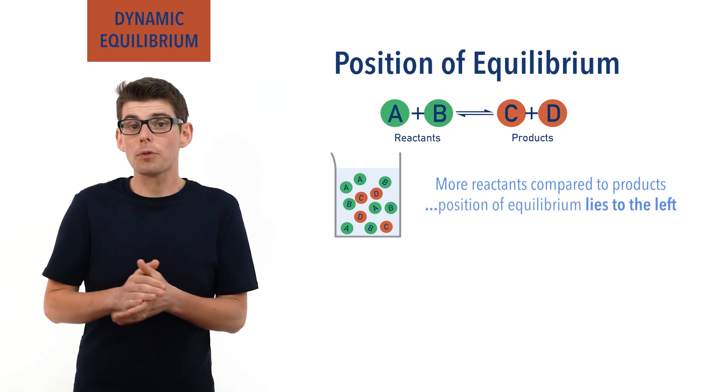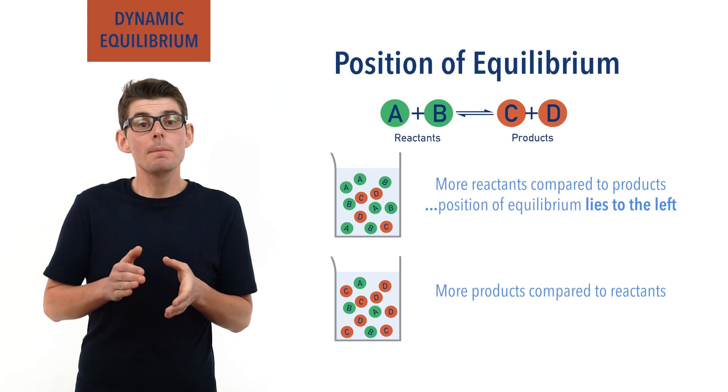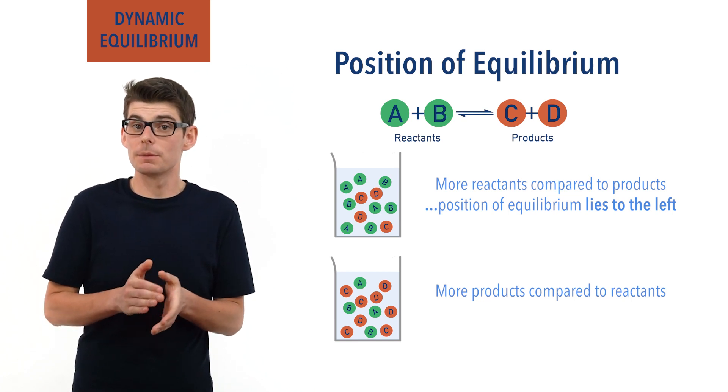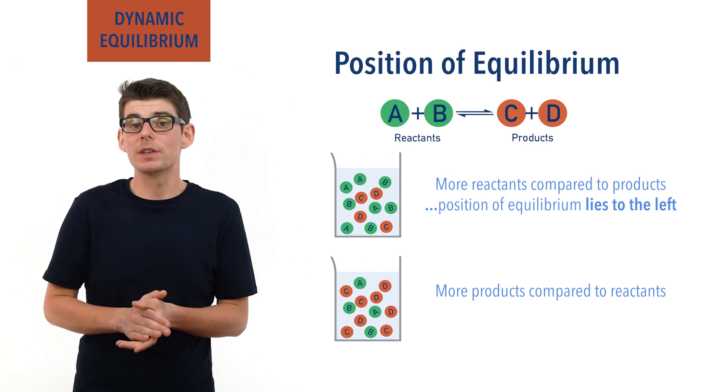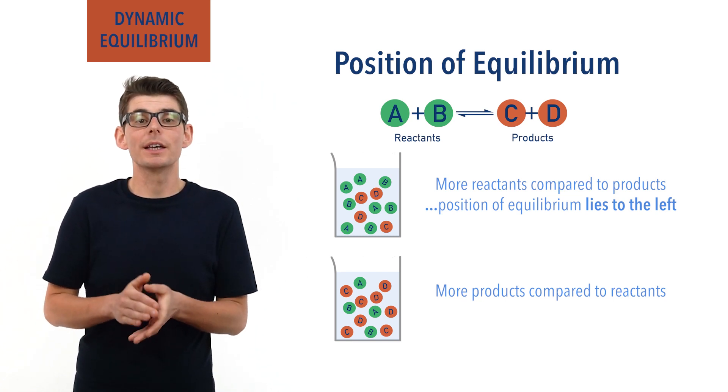The more products there are in the mixture compared to reactants, the more the forward reaction is said to be favoured compared to the backward reaction, and the position of equilibrium is said to lie to the right.